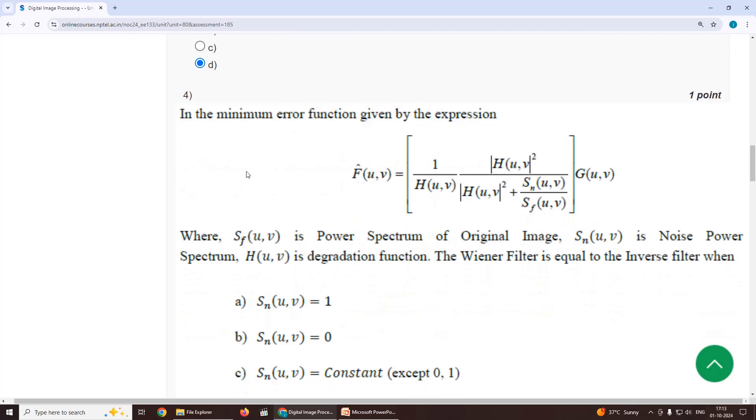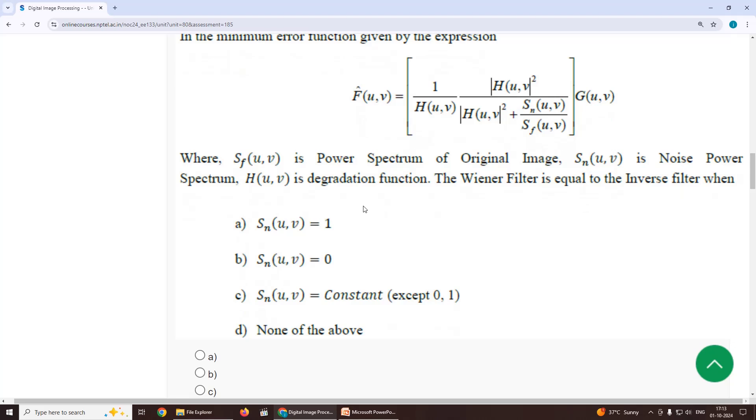Fourth one, in the minimum error function given by the expression. In this given expression, this is the transfer function of the image. The Wiener filter is equal to inverse filtering. The Wiener filter is equal to inverse filter when the noise power spectral density, when the noise in the numerator, the numerator part becomes zero. When the numerator part becomes zero, the entire term becomes zero.